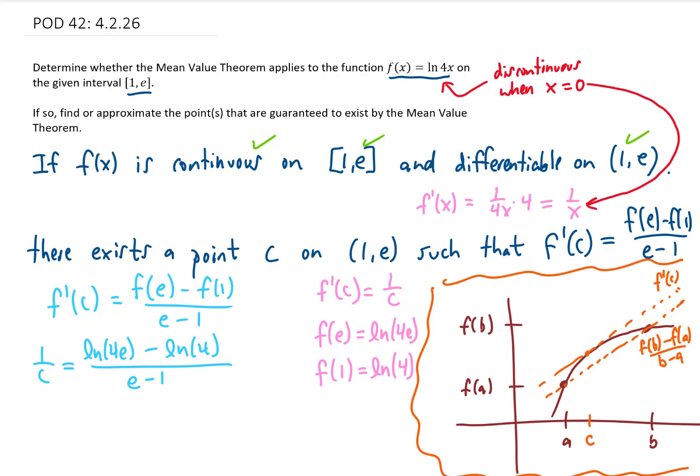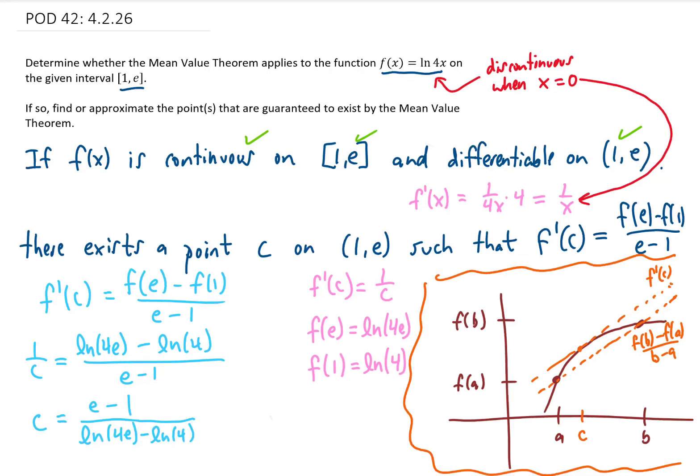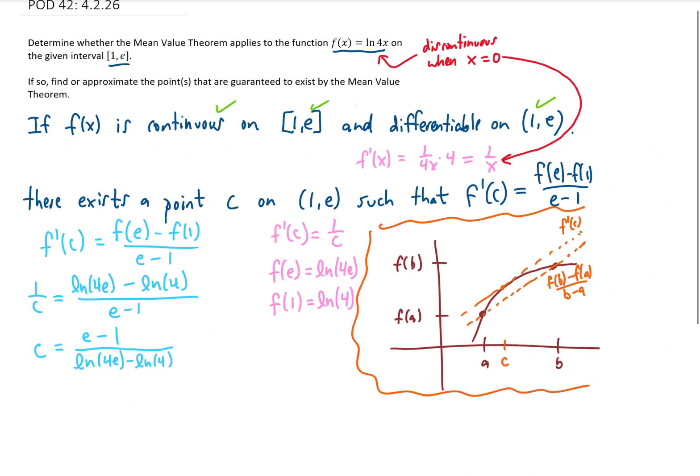If we're just looking for a c value, we can get c by itself just by taking the reciprocal of both sides of this equation. And the question I want to ask is, can this be simplified or reduced?